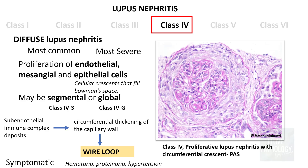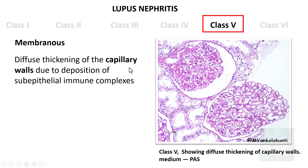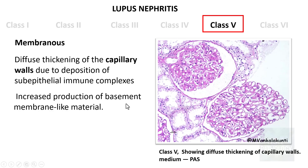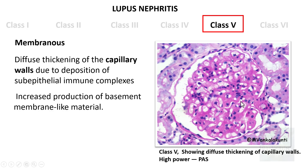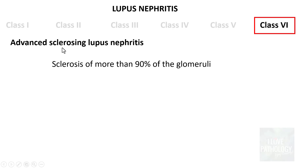Class 4 is often symptomatic with hematuria, proteinuria, and hypertension. Class 5 is referred to as membranous lupus nephritis, where there is diffuse thickening of the capillary walls due to deposition of subepithelial immune complexes, caused by increased production of basement membrane-like material — visible on PAS staining. Class 6 is advanced sclerosing lupus nephritis, where sclerosis affects more than 90% of glomeruli, representing end-stage renal disease.